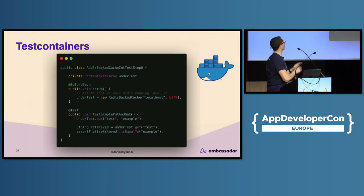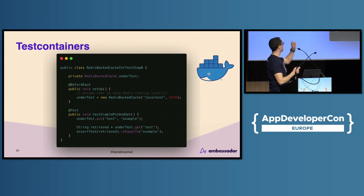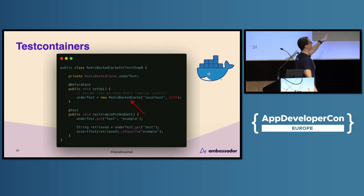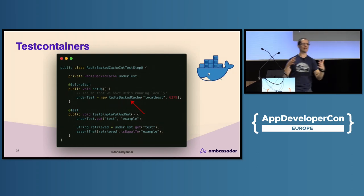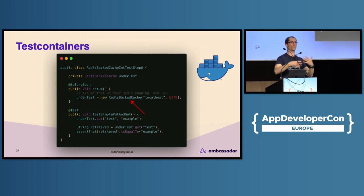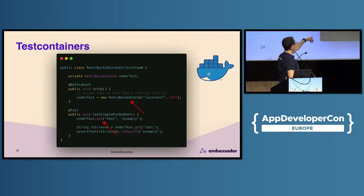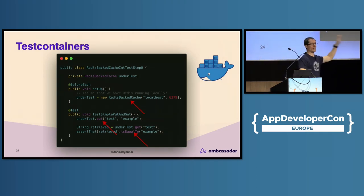Got to shout out TestContainers — I've been a fan of the project. Rich and Sergey and crew have done amazing work. There's a commercial entity called Atomic Jar which has been acquired by Docker, so the future is bright for TestContainers. You can literally run a service or a data store within a container. The beauty of TestContainers is it's super fast and it manages the lifecycle for you within your test runner — setup, teardown. You can run the real thing. In the example I'm putting data into a Redis and asserting on the get back, with no need to set up any orchestration.